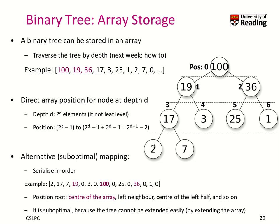In in-order traversal, we go to the left nodes and start with the leftmost node, then put the parent down, and so on — for example, we put down 7, then its parent, and so forth. In this mapping, the position of the root is the center of the array, and the left neighbor of this node is basically the midpoint between 0 and the center. This is really similar to our binary search — there's a lot of analogy between the two.